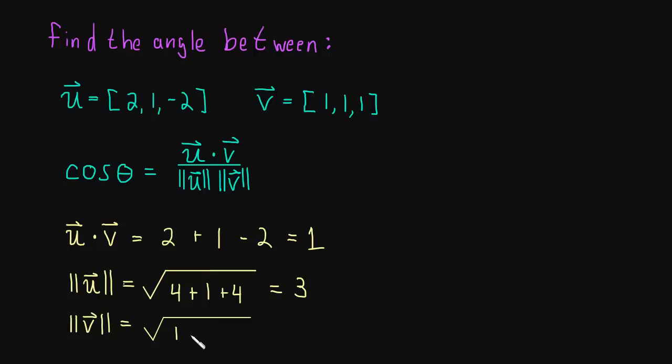Now we have 1 squared, well that's just 1, plus 1 squared, well that's 1, plus 1 squared, that's 1. So this is the square root of 3.